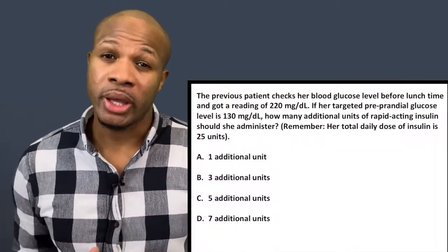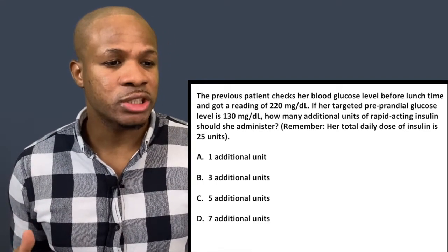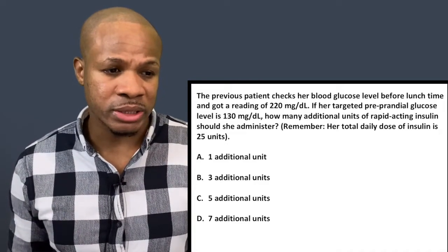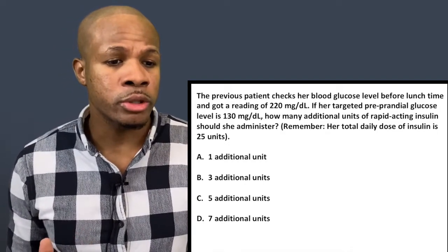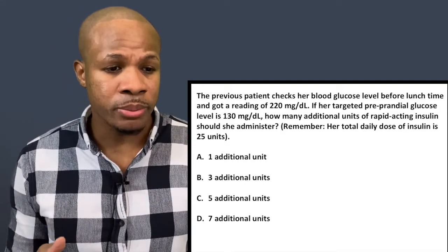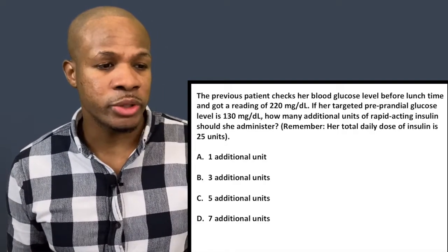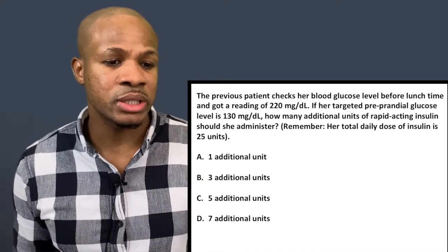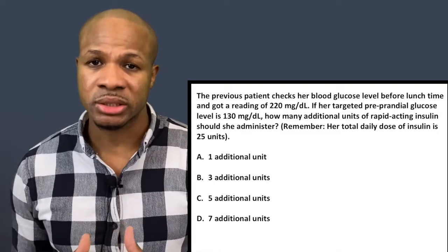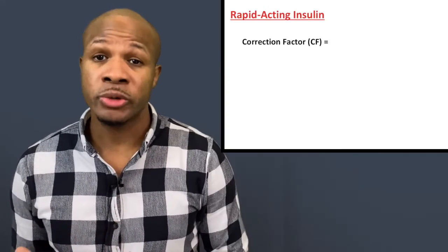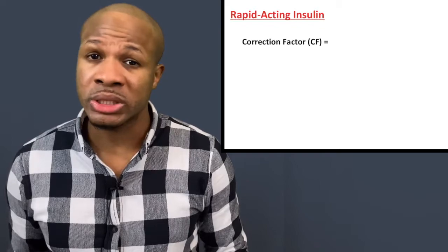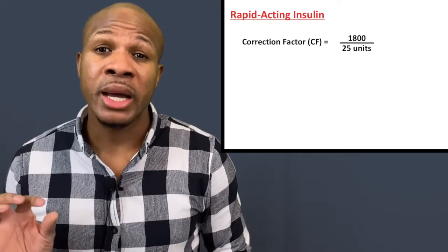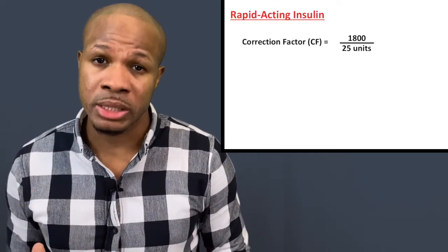Let's go on to question number two. Question number two states: the previous patient checks her blood glucose level before lunchtime and gets a reading of 220 milligrams per deciliter. If her targeted preprandial glucose level is 130 milligrams per deciliter, how many additional units of rapid-acting insulin should she administer? Her total daily dose of insulin is 25 units. Here, we're being asked to calculate a correction dose. For rapid-acting insulin, we calculate the correction factor by dividing 1,800 by the total daily dose of insulin.